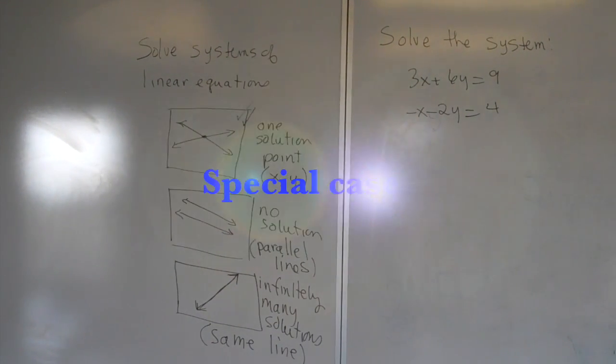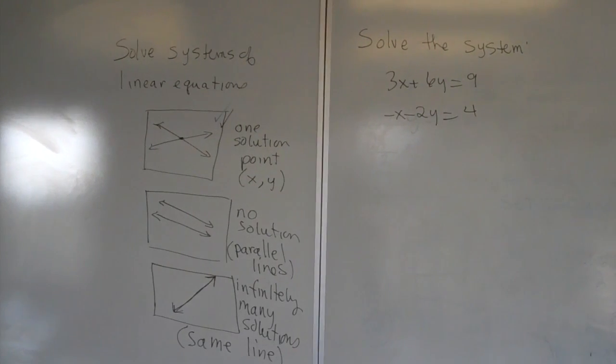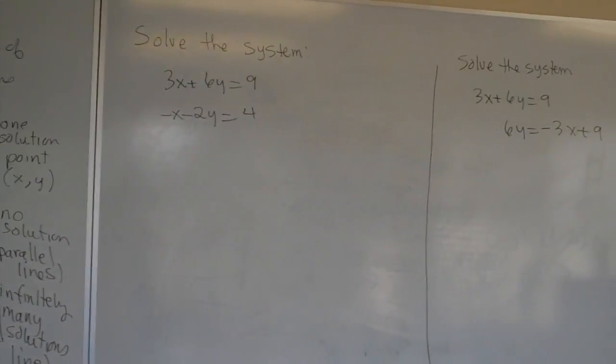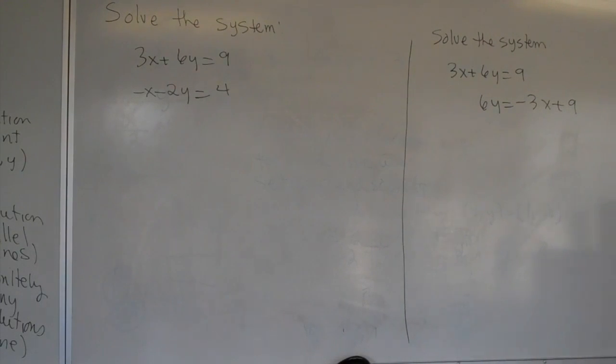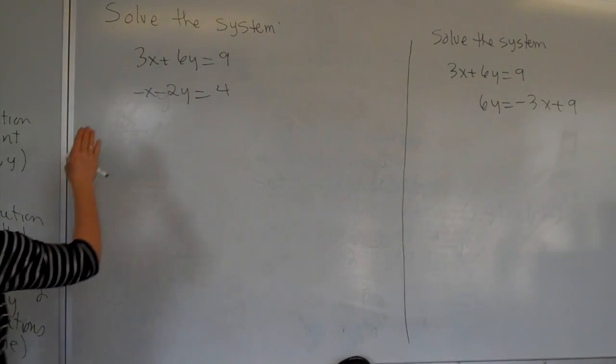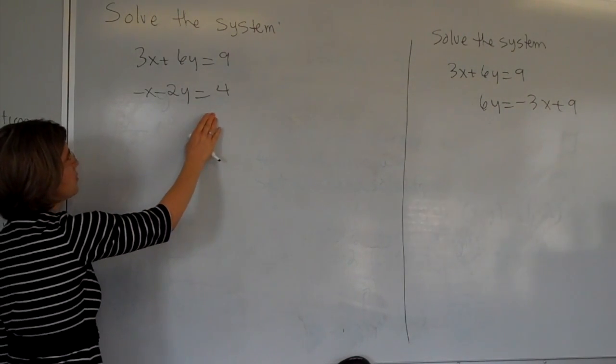So I'd like us to look at two examples that show us the no solution and the infinitely many solutions options before we quit for today. Suppose that we were to solve the system 3x plus 6y equals 9 and minus x minus 2y equals 4.